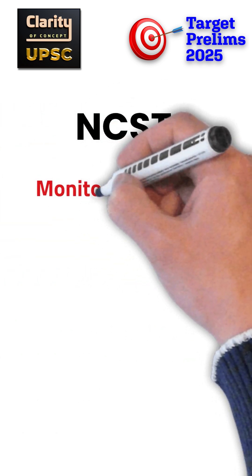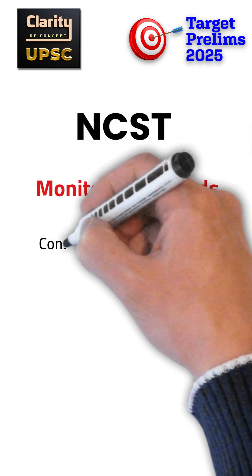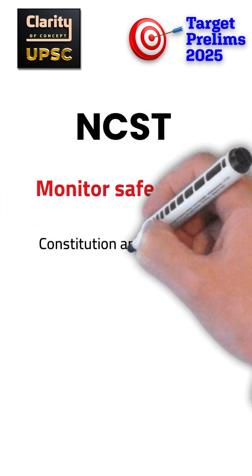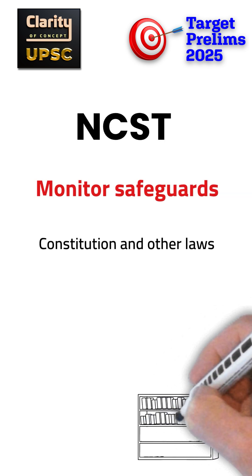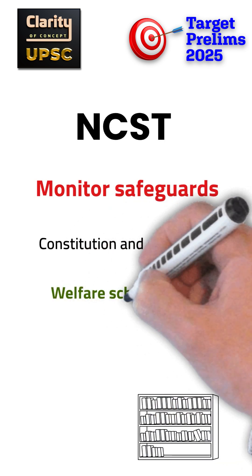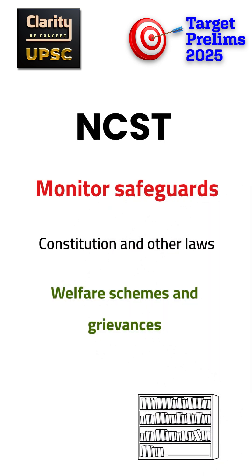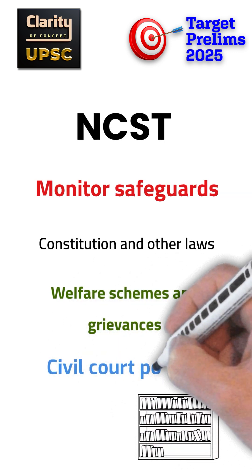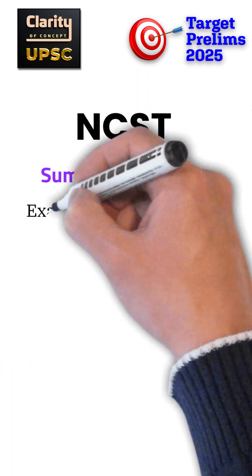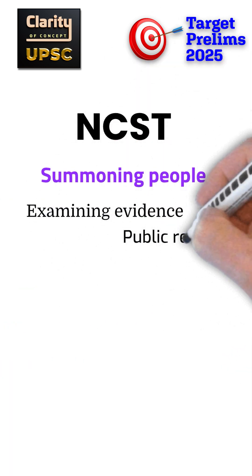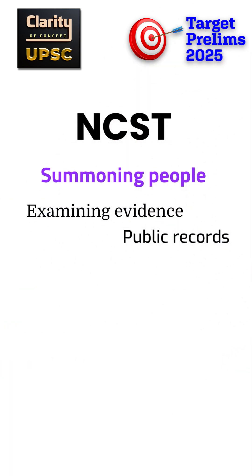The NCST's main role is to monitor safeguards provided to scheduled tribes under the Constitution and other laws. It ensures the proper implementation of welfare schemes and addresses tribal grievances. The Commission can investigate complaints about rights violations and has civil court powers during inquiries, including summoning people, examining evidence, and accessing public records.